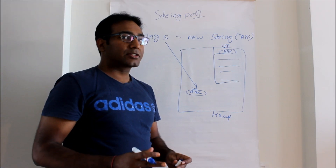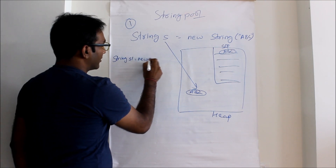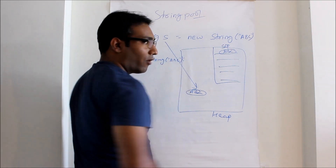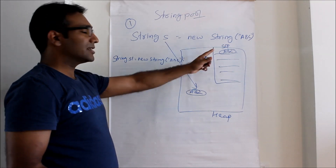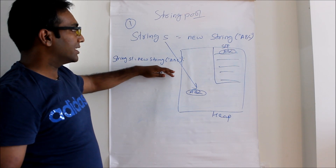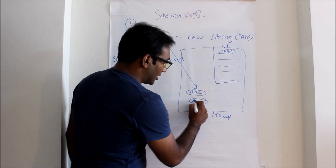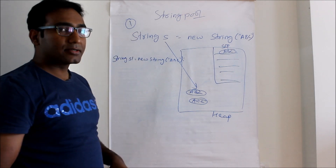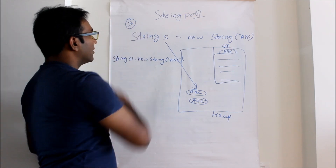Now the second question the interviewer will ask: if you already have `s1 = new String("abc")` again, what will happen? How many objects will be created? The string pool only holds one copy — if abc is already there, it will not put it again. But in heap memory, when s1 is created, it will check the string pool and then put another abc in the heap. So with these two statements total, that is two objects for the first plus one for the second, giving three objects total.